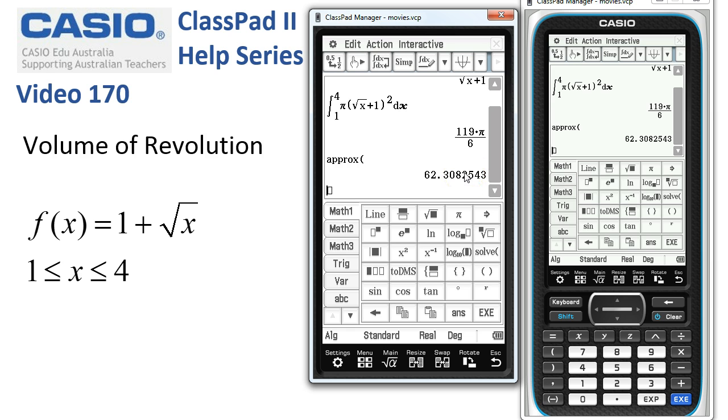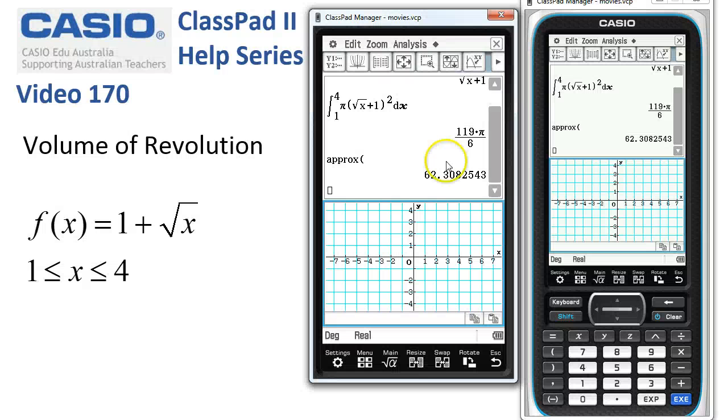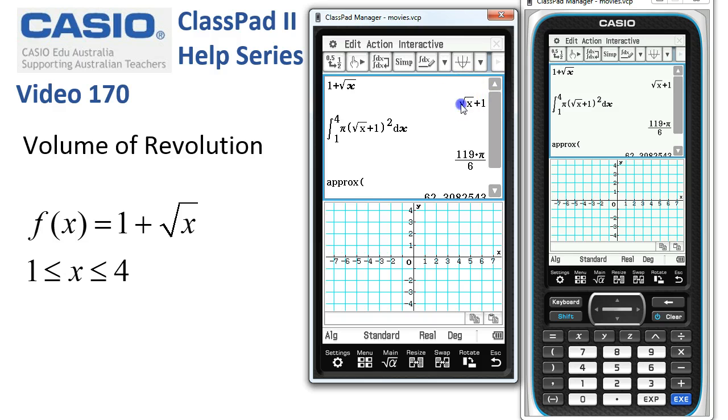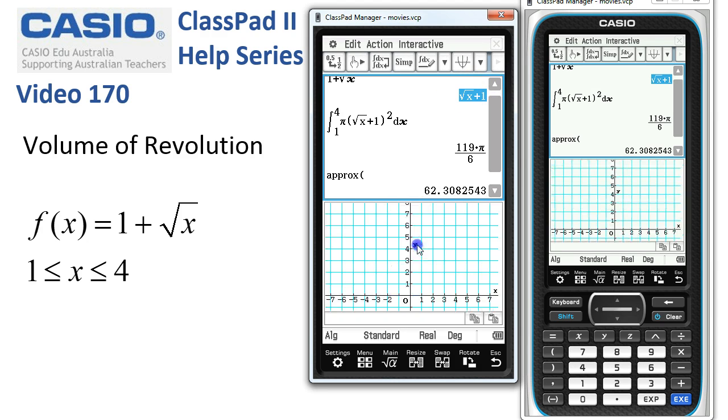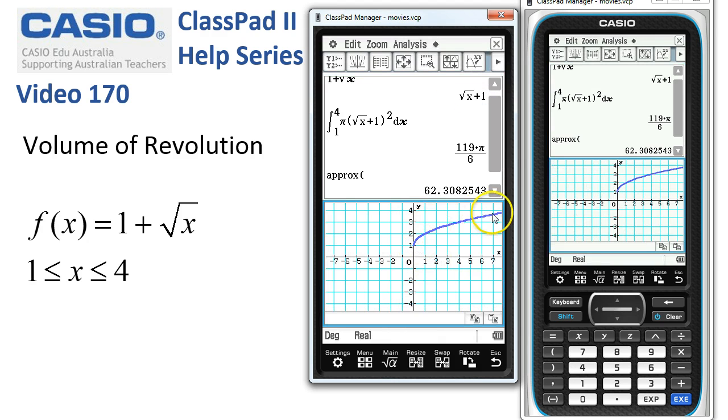Now the other way to have a look at this is graphically. So I'm going to get myself a bit of graph paper in the downstairs window and take a copy of our function and drop it into that window. And there's the actual function. And we want to find the volume of revolution between 1 and 4.